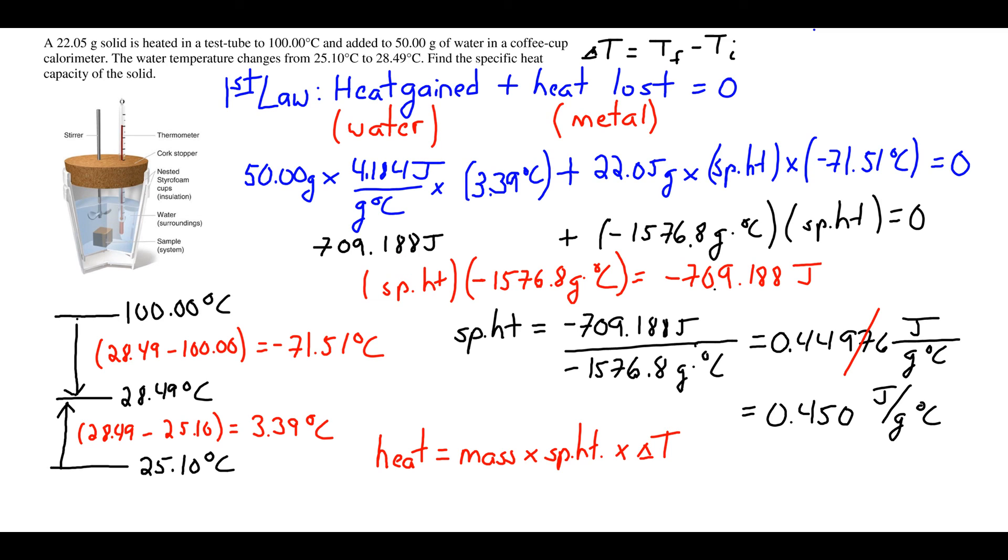We have negative 709.188 divided by negative 1576.8. We get our value for specific heat, limit ourselves to three significant figures, and have our final answer.